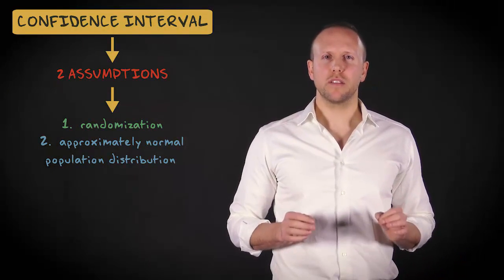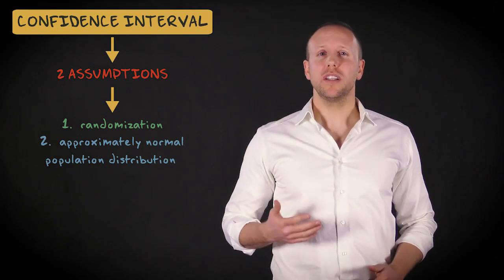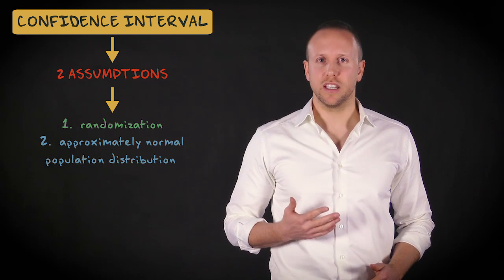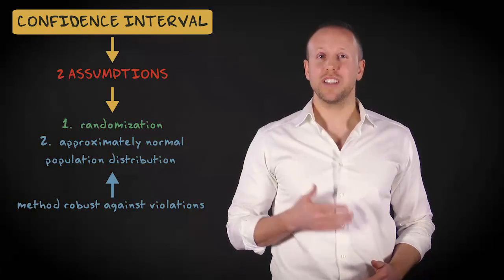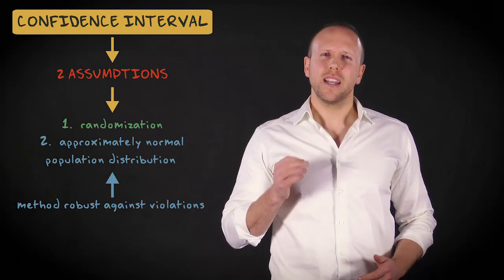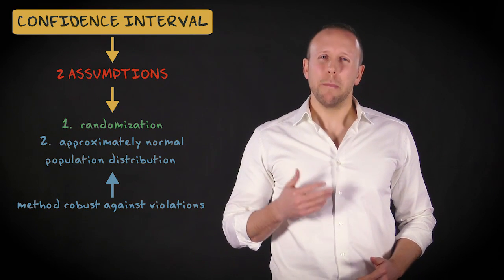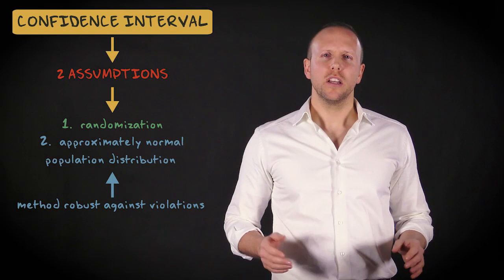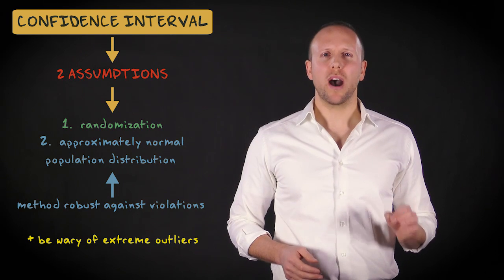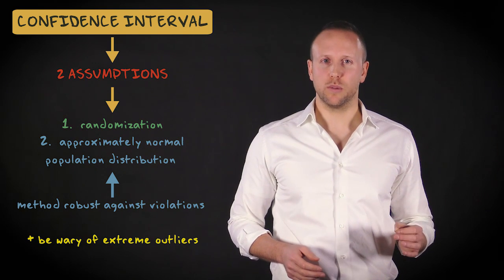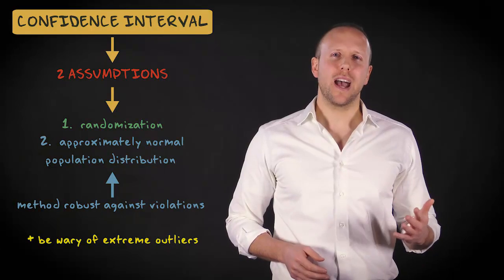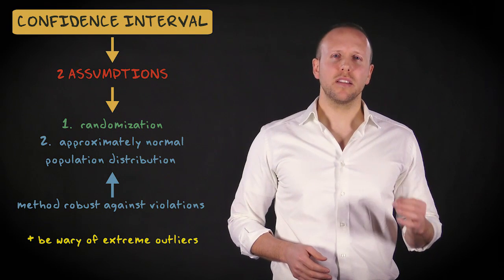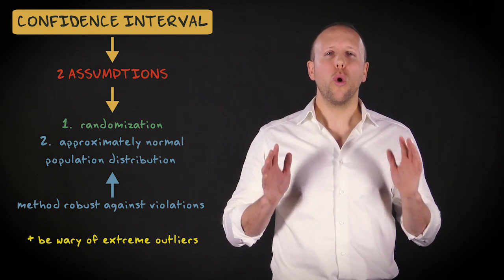However, things are not as bad as they seem. Using the t-distribution to construct a confidence interval for a mean is robust against violations of this second assumption. That a statistical method is robust means that it performs well even if the assumption is violated. Finally, you should also be wary of extreme outliers when constructing a confidence interval based on the t-distribution. When your data have extreme outliers, the method doesn't work well. So always check your data for outliers before you start.